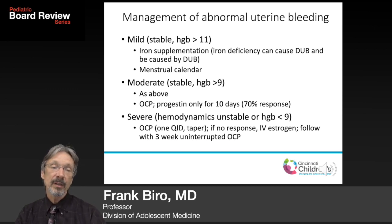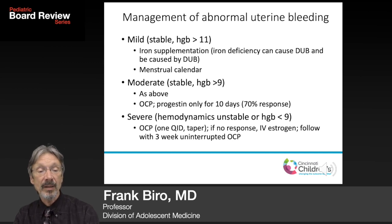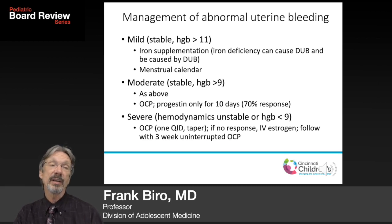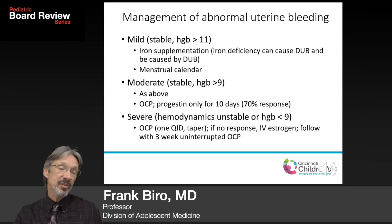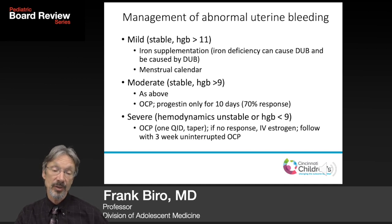For moderate abnormal uterine bleeding — hemodynamically stable, hemoglobin above 9 — management as above plus either OCPs or 10 days of progestin every month. Progestin works by allowing the endometrial lining to mature and shed properly rather than under unopposed estrogen. The advantage of progestins alone is less interference with the hypothalamic-pituitary-ovarian axis, potentially allowing earlier resolution. If the patient is sexually active, OCPs are the straightforward choice.